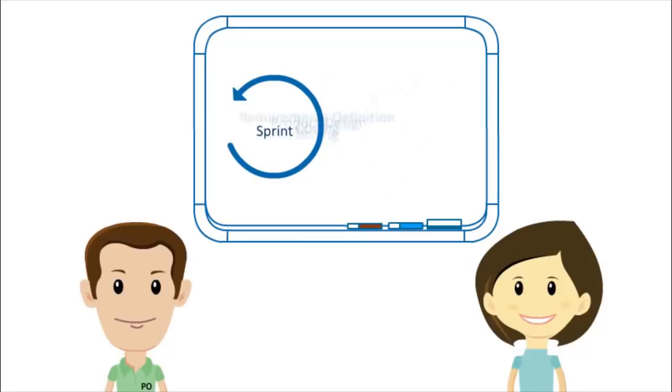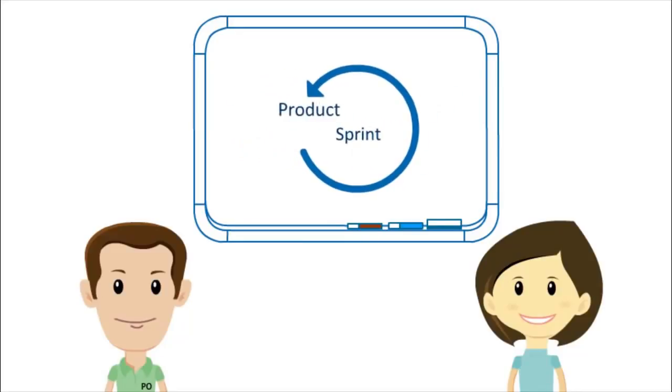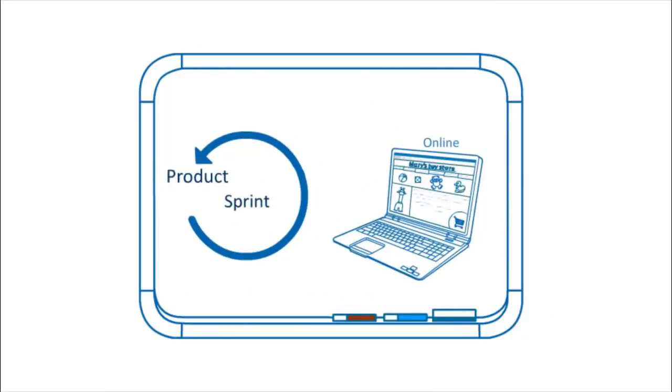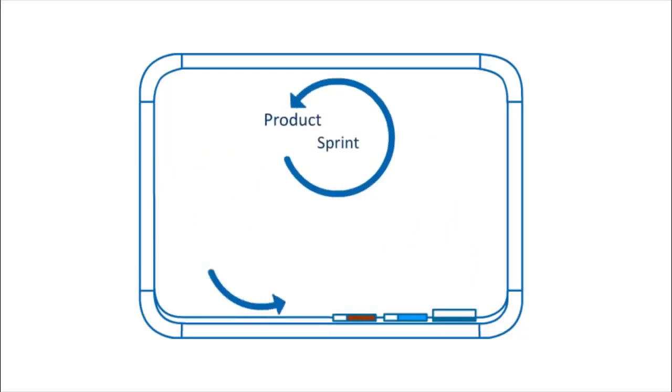So after the first sprint, Mary will have a live website that includes the functionality that she needs the most. Each sprint after that will improve the website a little bit more incrementally, building on top of each other.